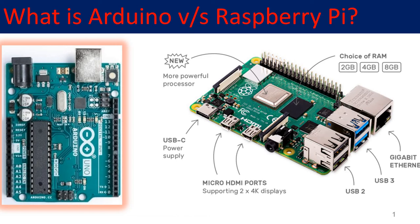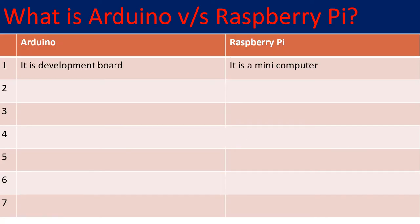Let's get started with the basic difference between the Arduino and the Raspberry Pi. This is the Arduino Uno and this is the Raspberry Pi 4. Arduino is a development board whereas Raspberry Pi is a mini computer — just like the computers you may have used. Arduino Uno is a development board you can use to develop embedded applications, whereas Raspberry Pi is a general-purpose mini computer.